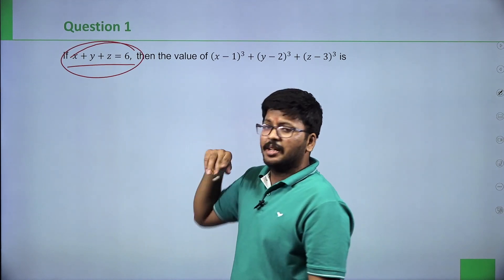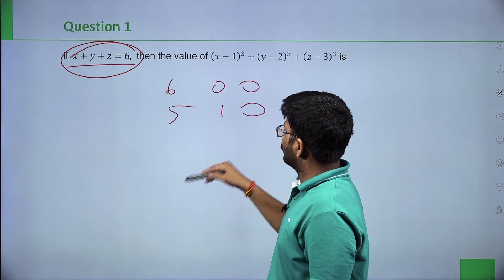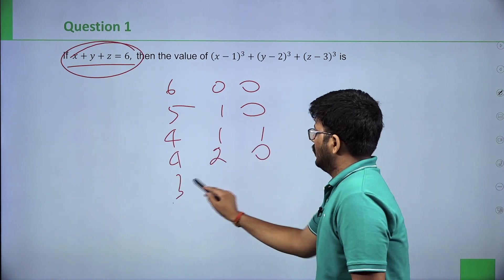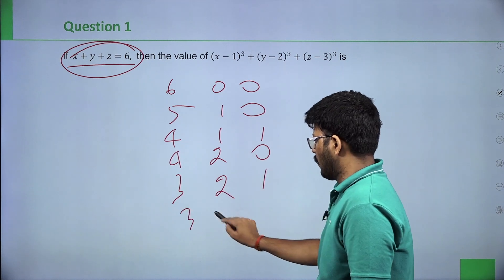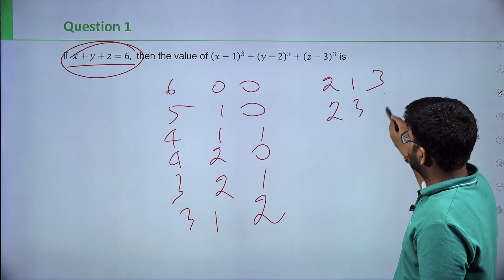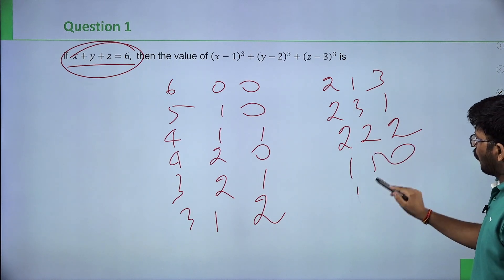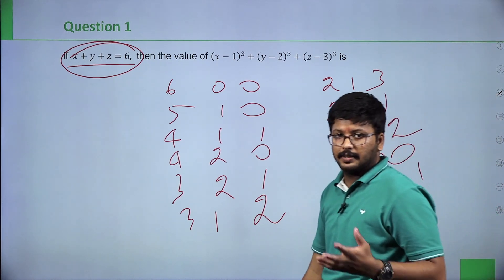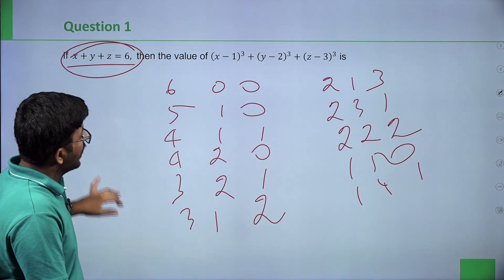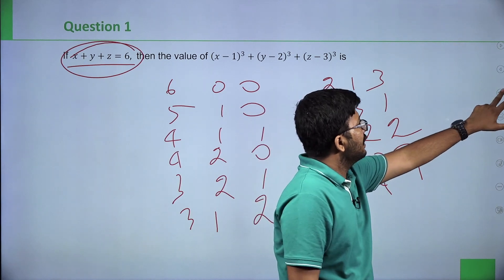The possibilities are: 6,0,0 or 5,1,0 or 4,1,1 or 4,2,0 or 3,2,1 or 3,1,2 or 2,1,3 or 2,3,1 or 2,2,2 or 1,5,0 or 1,4,1 — there are many possibilities. Any set of 3 numbers that add up to 6 will work.